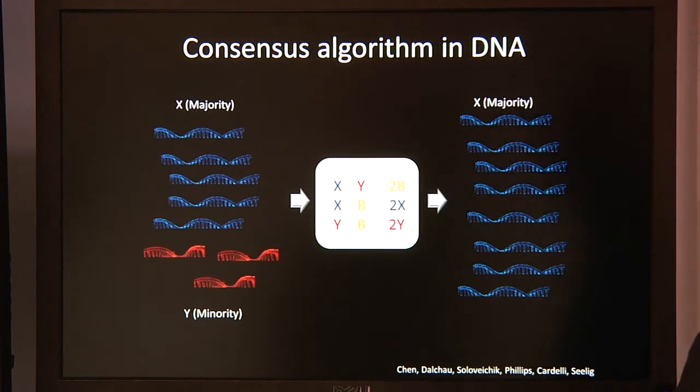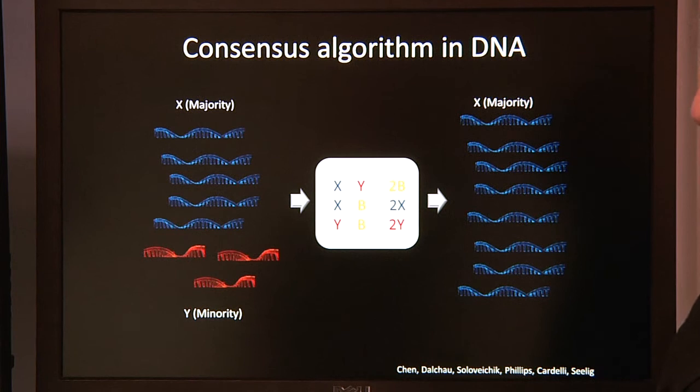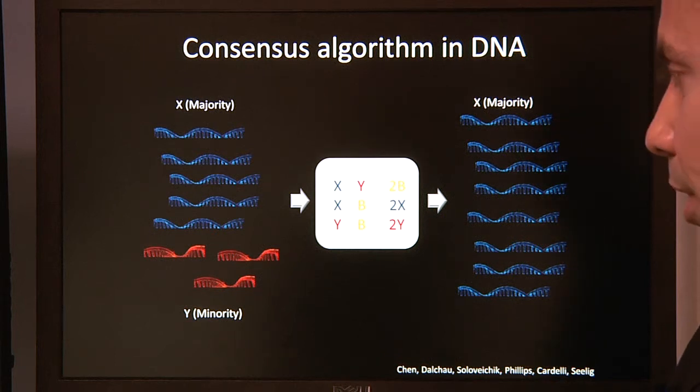In collaboration with the lab of George Selig at the University of Washington, and with Luca Cardelli in the programming languages group, we've developed an approximate majority algorithm in DNA, which determines the consensus between two populations and computes the majority in optimal time.